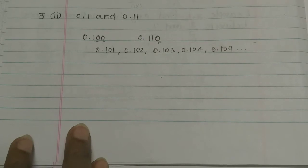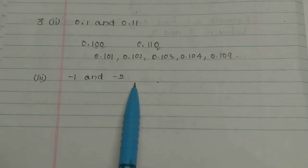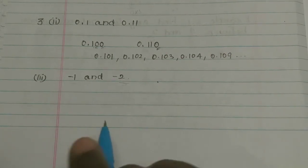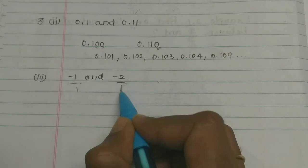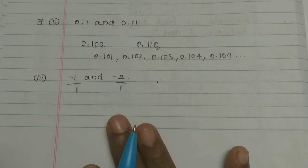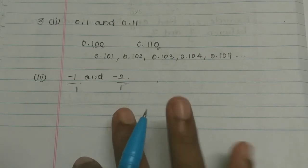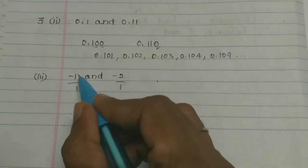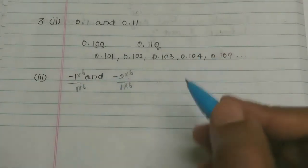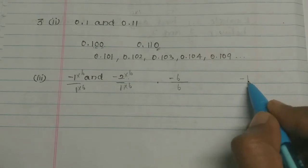In the third subdivision, find 5 rational numbers between minus 1 and minus 2. This method is very easy. First, make the denominators equal. If you need 5 rational numbers, multiply by 6. So minus 1 becomes minus 6 by 6, and minus 2 becomes minus 12 by 6.